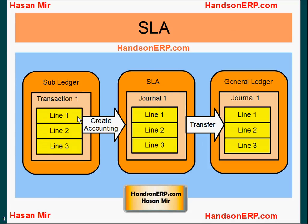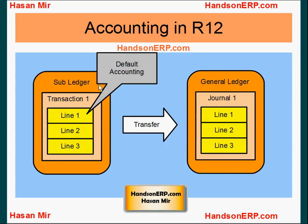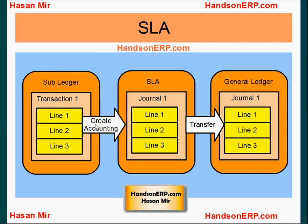Accounting information will be read from the subledger — that's why we call it default accounting — because this information will be read for the purpose of creation of accounting. That doesn't mean this will be the final accounting. Accounting could change based on the accounting rules we are using in the subledger accounting module.